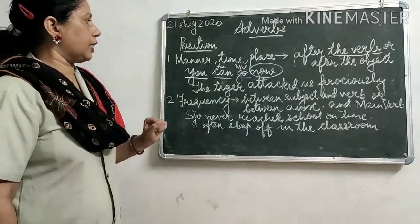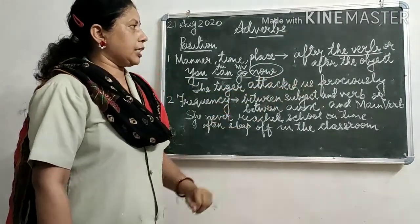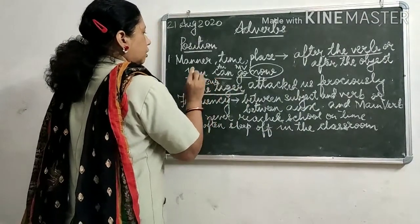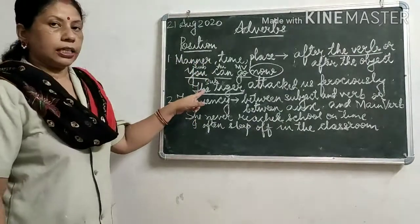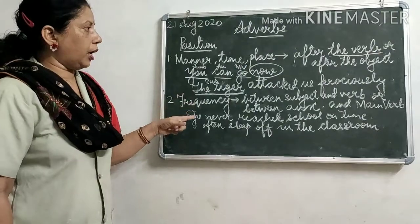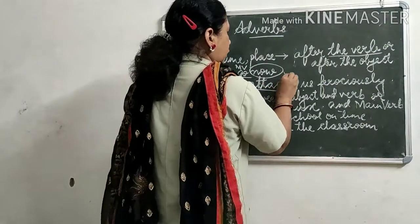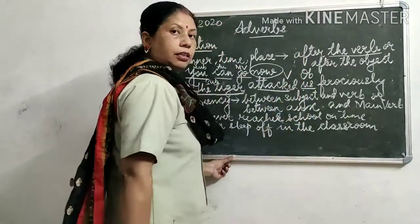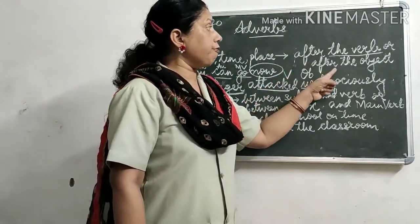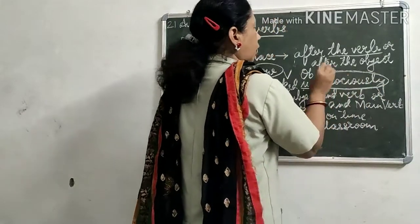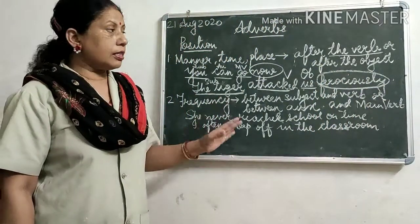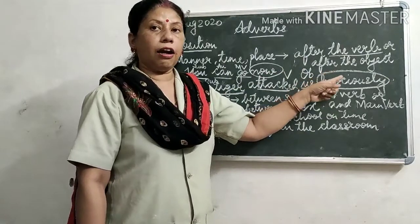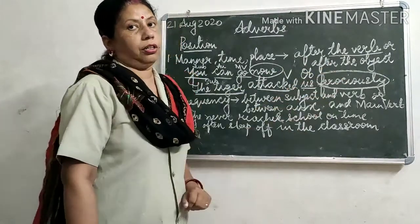The next sentence: 'The tiger attacked us ferociously.' Here, 'the tiger' is the subject, 'attacked' is the main verb, and 'us' is the object. Since this sentence has an object, the adverb 'ferociously' is placed after the object.